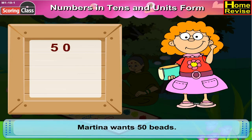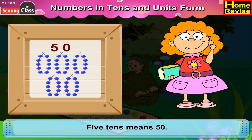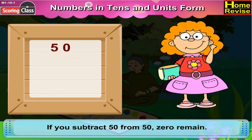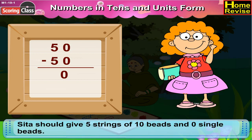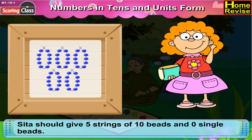Martina wants 50 beads. You know that 5 tenths means 50. If you subtract 50 from 50, 0 remains. So, Sita should give 5 strings of 10 beads and no single beads.